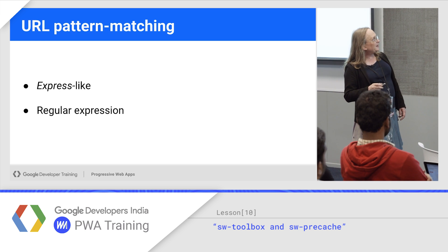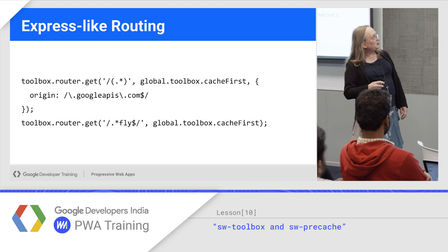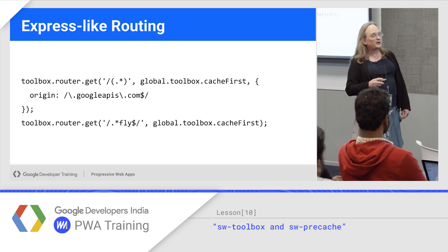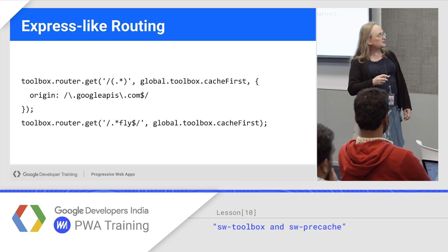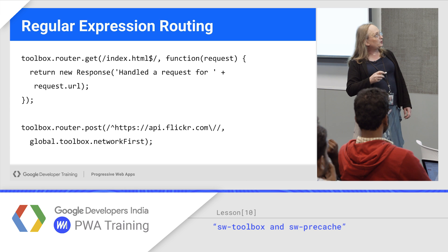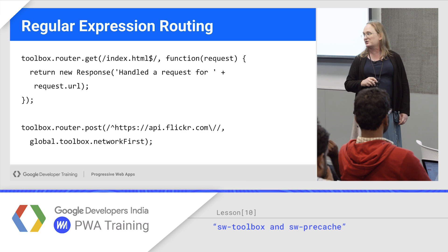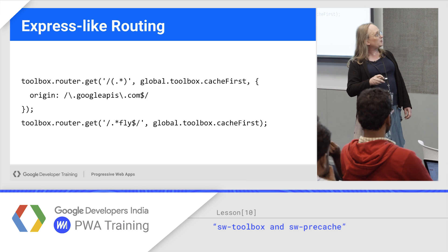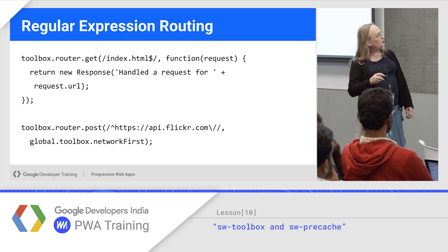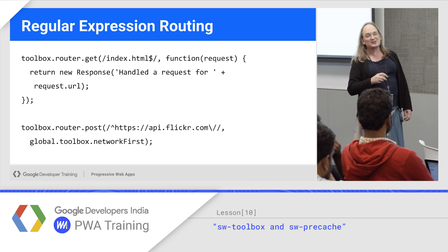For pattern matching in the routes, if you're used to the Express API in Node, you can use that particular syntax. Or if you're used to regular expressions, use that syntax — either one works. So it either takes a string for Express, or it takes a regex object, denoted by the slashes.